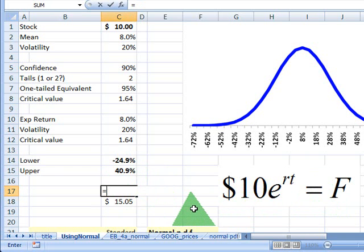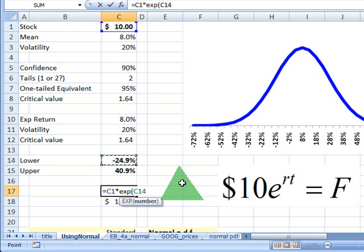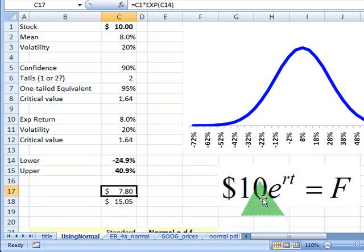So on the lower bound here, I would really just say my stock price, that's my $10 multiplied by exponential function of my lower bound. And that gets me $7.80. So that's my $10 continuously compounded at negative 24% gets me a future price of $7.80.